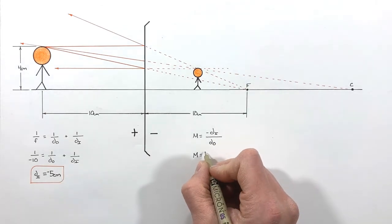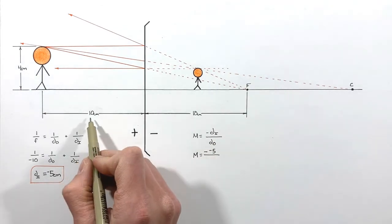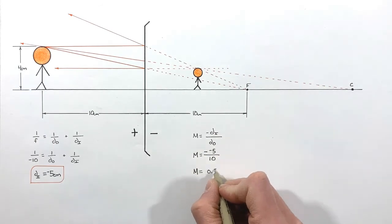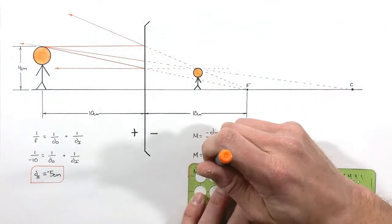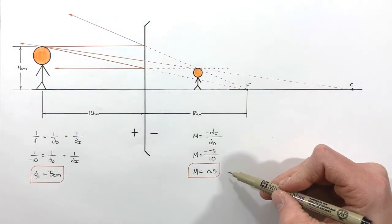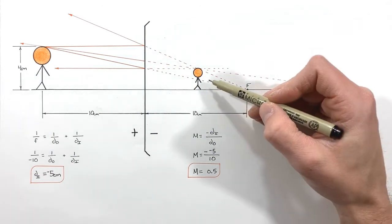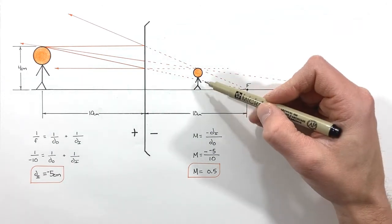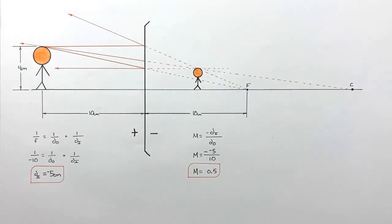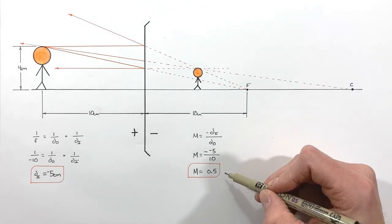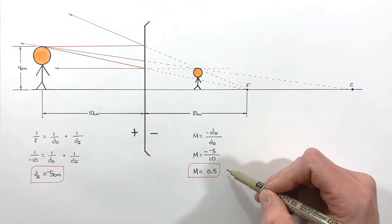Next, let's work out the magnification. Knowing our image distance is negative 5 centimeters and plugging that in over our object distance of 10 centimeters, we find the magnification in this problem is 0.5 — that is to say, the image is half as large as the object.